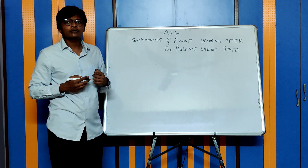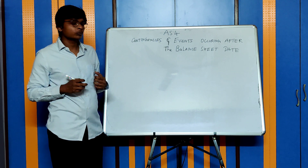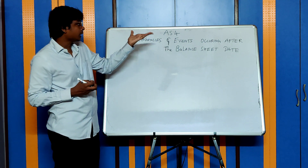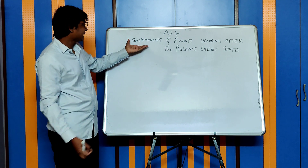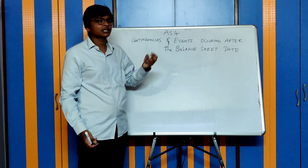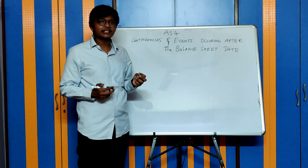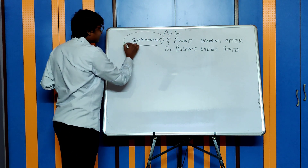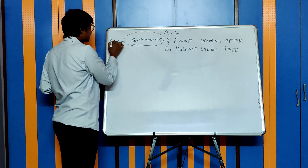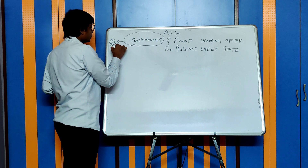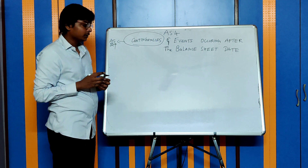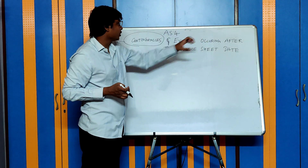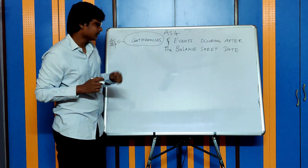Hi everyone, welcome to the CA Classroom. Today we will be discussing AS4 - Accounting Standard 4, which covers contingencies and events occurring after the balance sheet date. However, the segment of contingencies will be separately dealt with in AS29. So we will now be discussing events occurring after the balance sheet date.